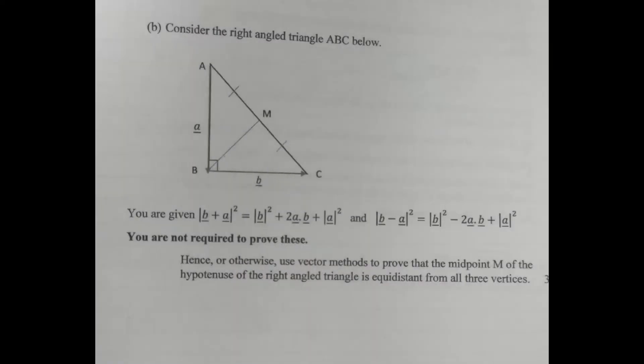Hello and thanks for using TickBoom. For this question we're given the right angle triangle ABC and we're told that in vector form we've got two results that we can use. The vector b plus a, the magnitude of that squared, is equal to the magnitude of b squared plus 2 times a times b plus the magnitude of a squared. And also b minus a squared equals b squared minus 2ab plus a squared, all in vector form.